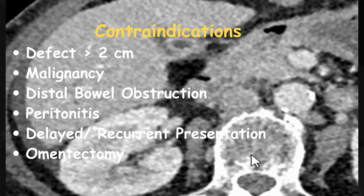If there is distal bowel obstruction distal to the site of perforation, patching would not address the underlying problem. Also, in cases of diffuse peritonitis, delayed presentation, or recurrent perforation at the same site, these are all contraindications because the Graham patch repair would become less reliable. Another contraindication could be prior omentectomy — if there is very little omentum left in the body, it is not available to use for the patch repair.